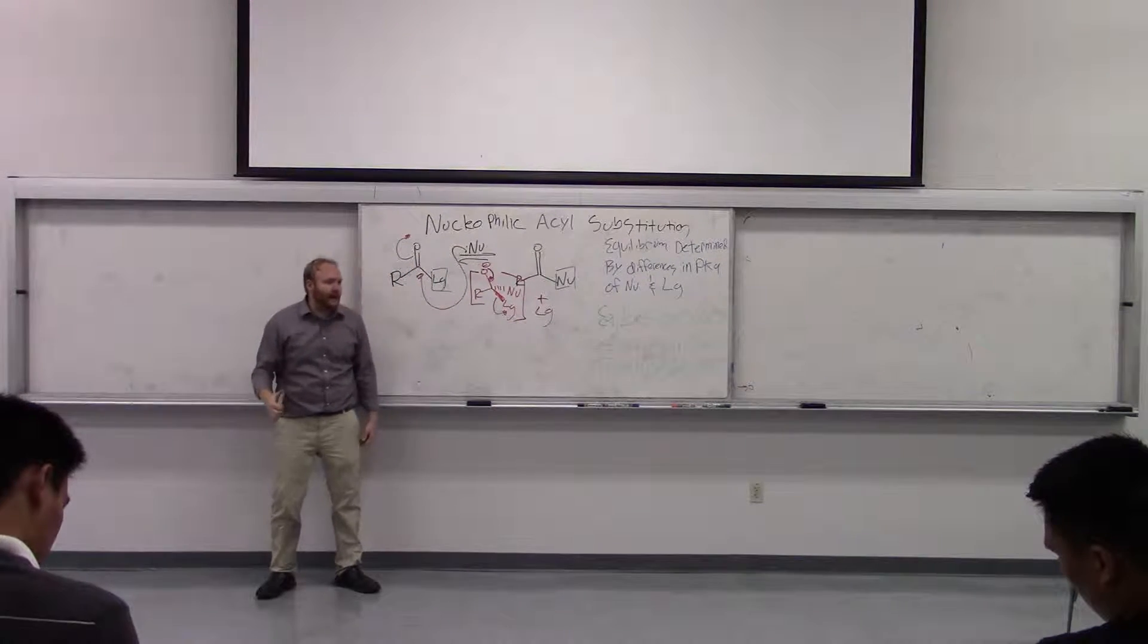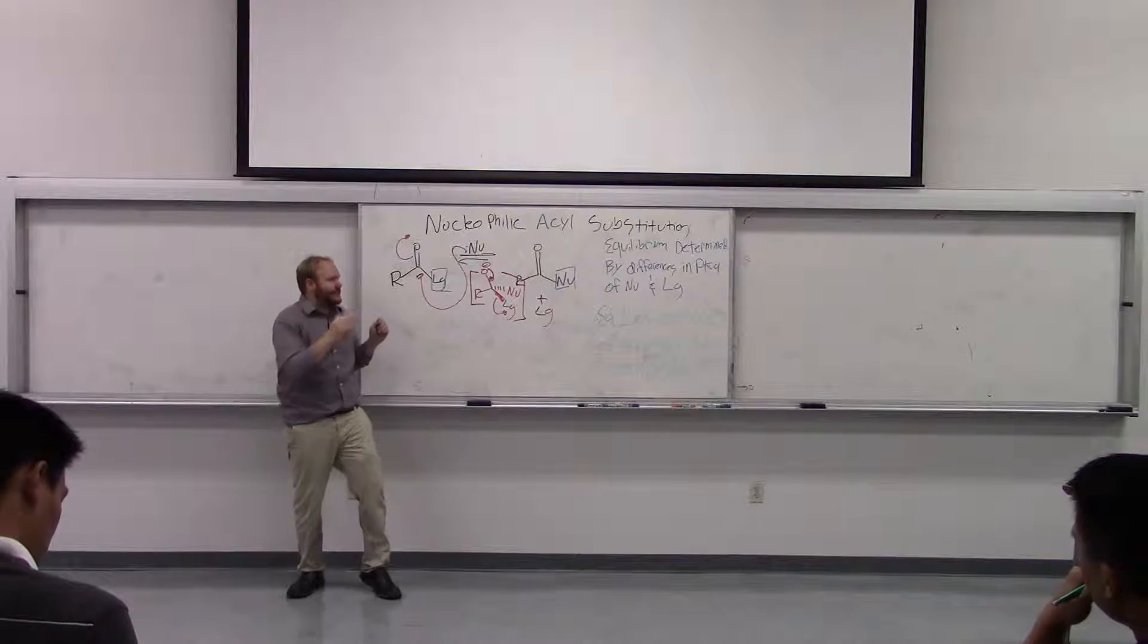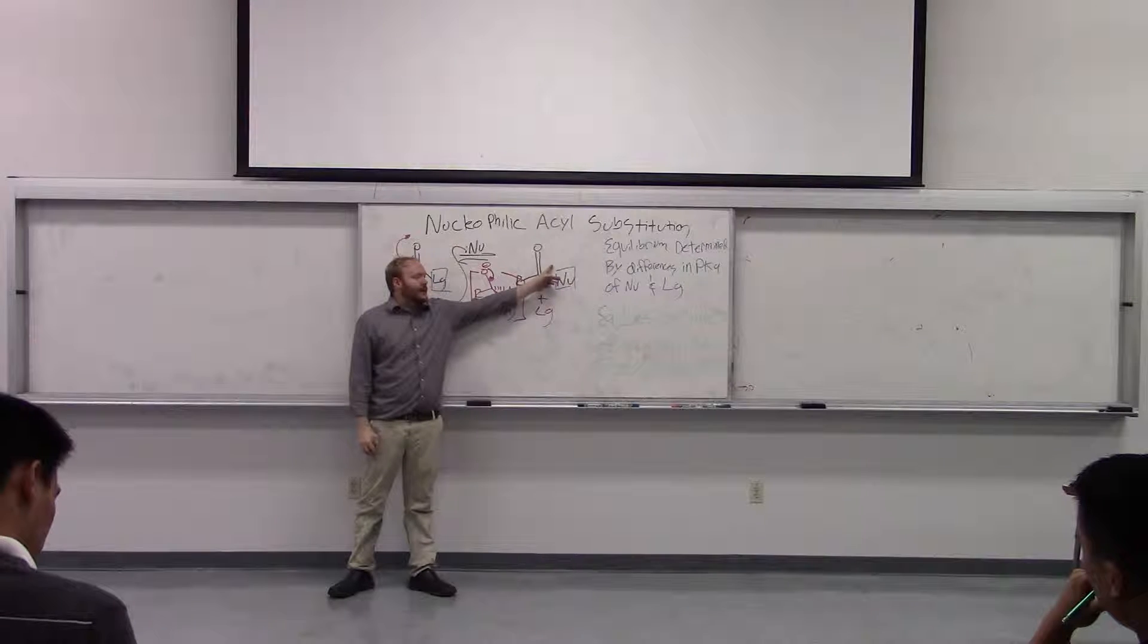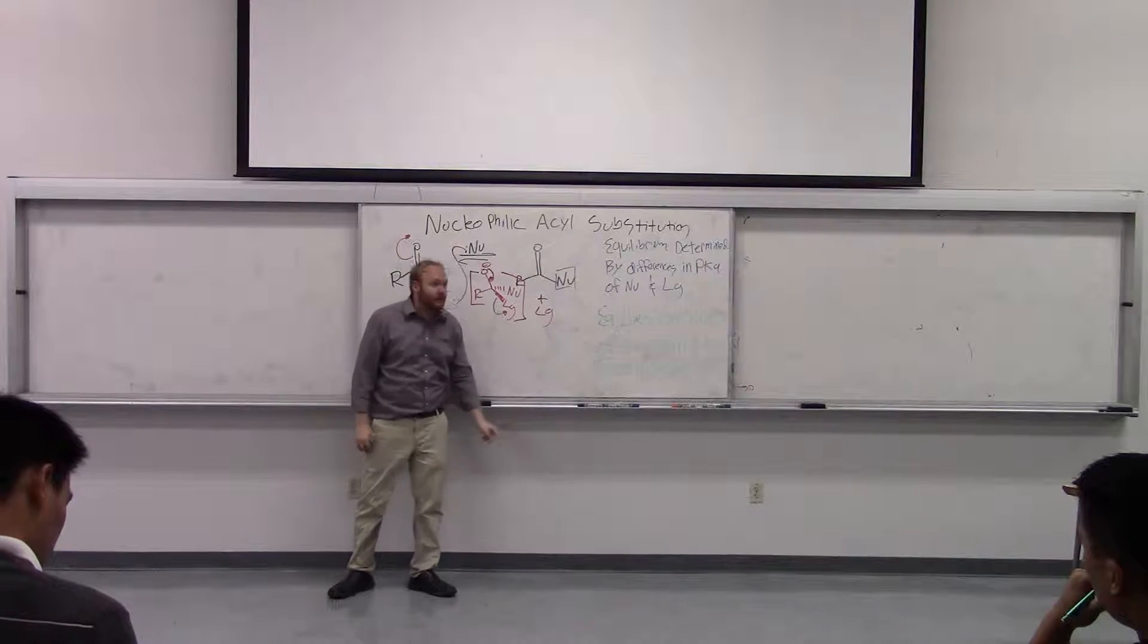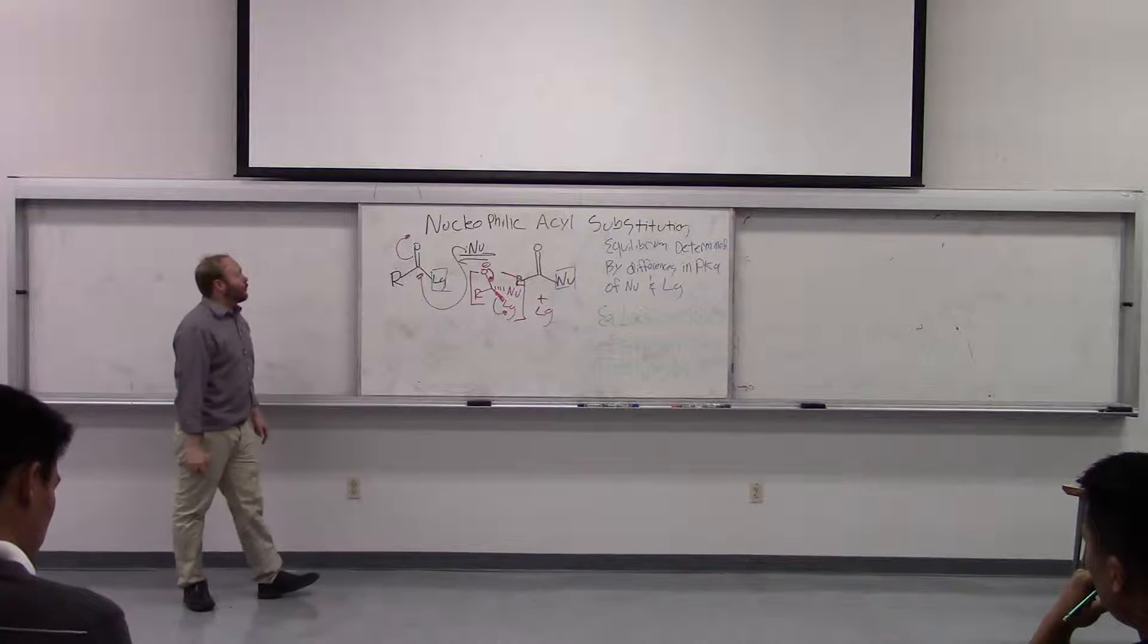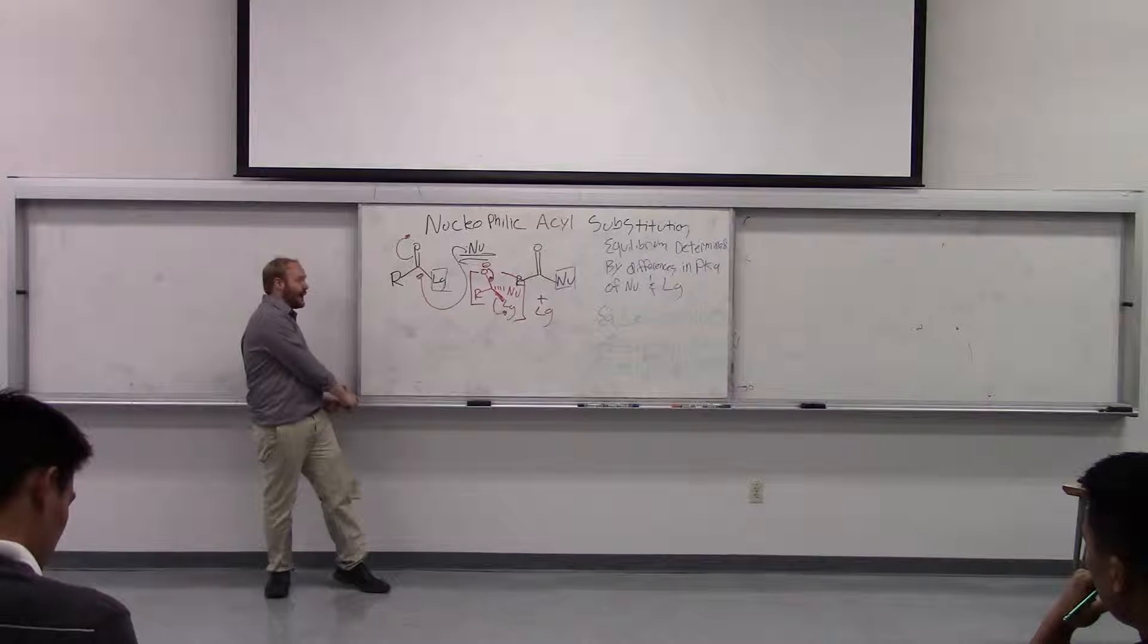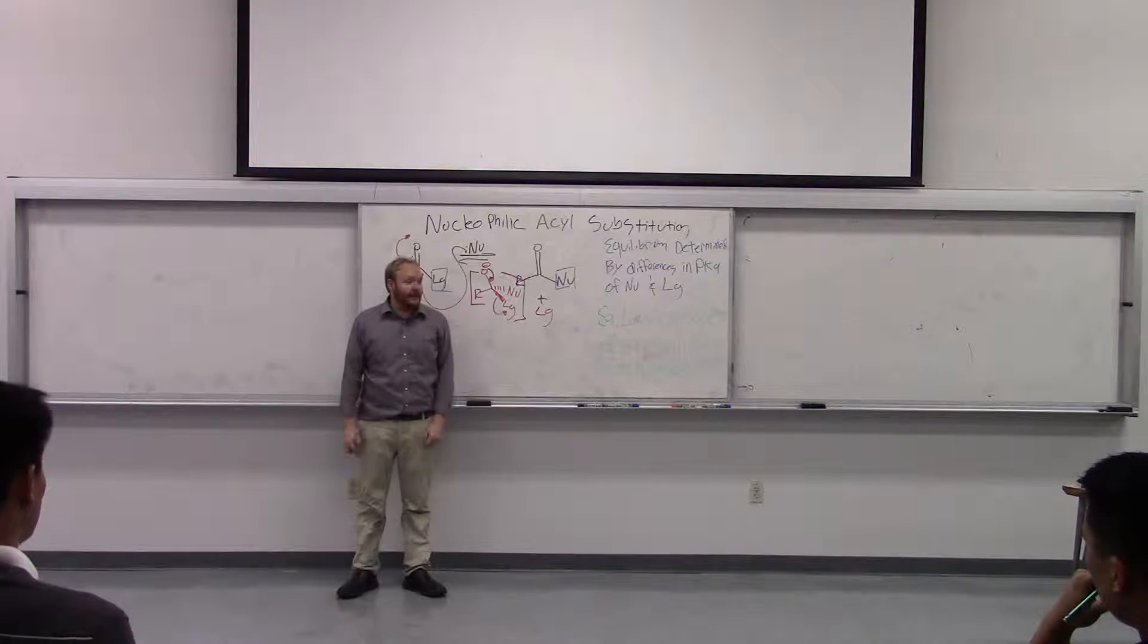So the stronger base, the equilibrium is going to side with the stronger base now being part of the carbonyl, so being bound to the acyl carbon, and the weaker base, i.e. stronger acid of its conjugate acid, swimming around in solution.